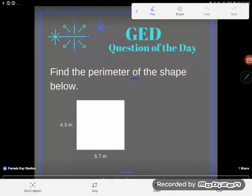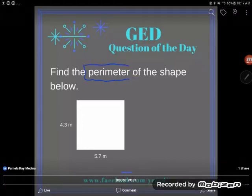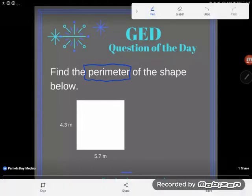So first of all, what are we finding? We're finding perimeter. And it just says of the shape below, and I want you to be a little cautious with that because when students look at this shape right here, they often automatically tell me that's a square.